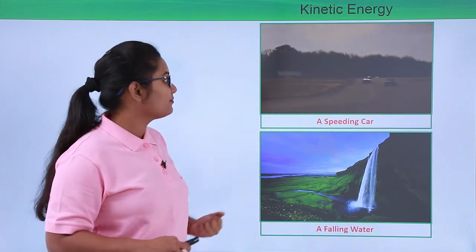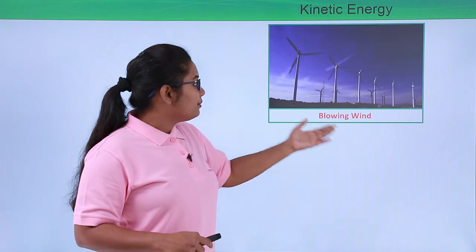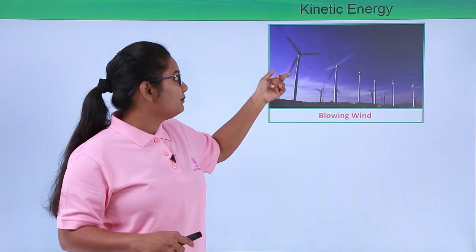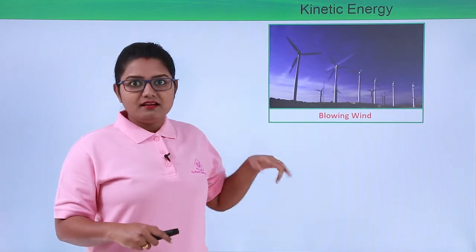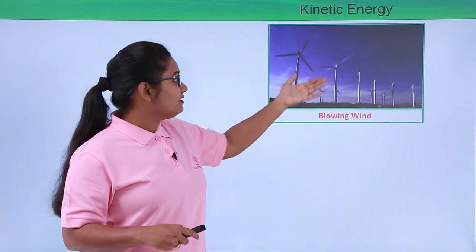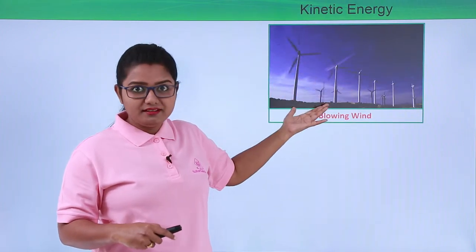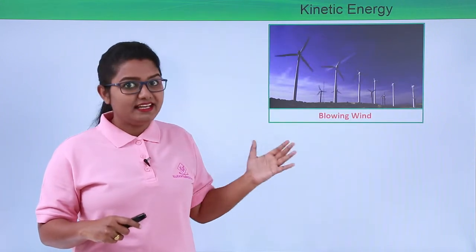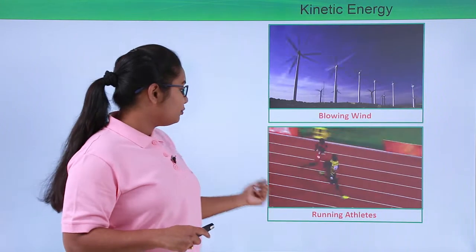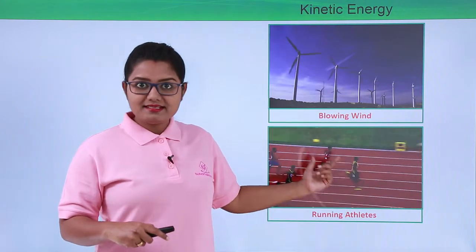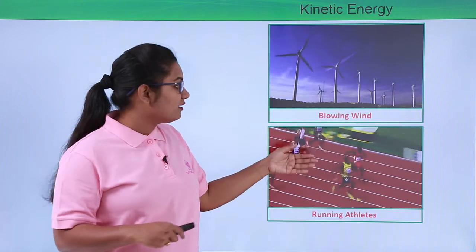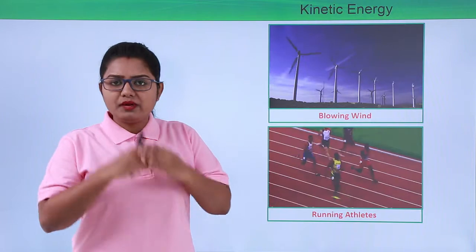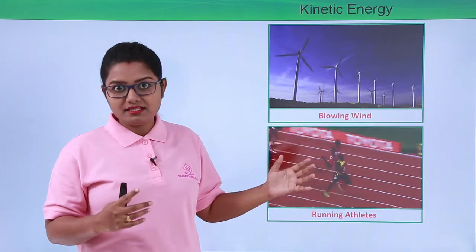Another example could be blowing wind. When the wind blows the windmills, the blades of the windmills start rotating, and that is how we see work being performed by the blowing wind. That means the blowing wind, because of its motion, has some kinetic energy. Another example could be running athletes — since they are running with a certain velocity, they possess kinetic energy. So any object moving with a particular velocity has some kinetic energy.